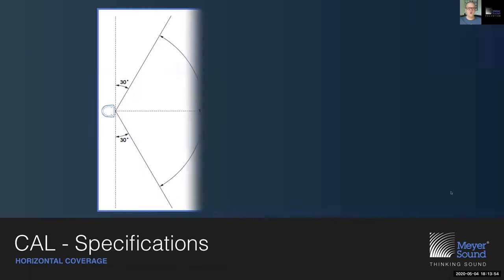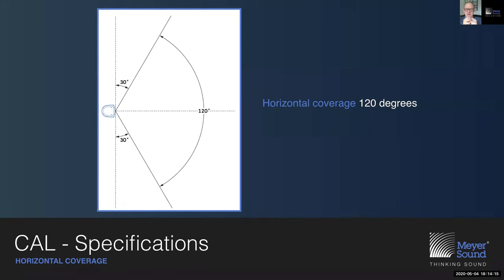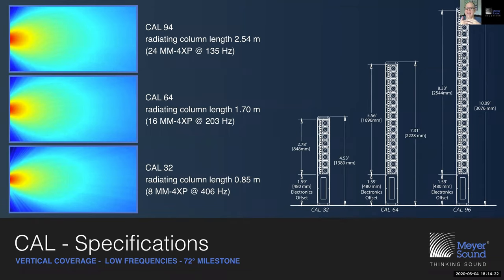The horizontal coverage is 120 degrees — 60 degrees in each direction until 6dB of angular attenuation is reached — and this applies to all models: the CAL32, 64, and 96. In the vertical, it is a bit more involved. Let's start by looking at the low frequencies first.